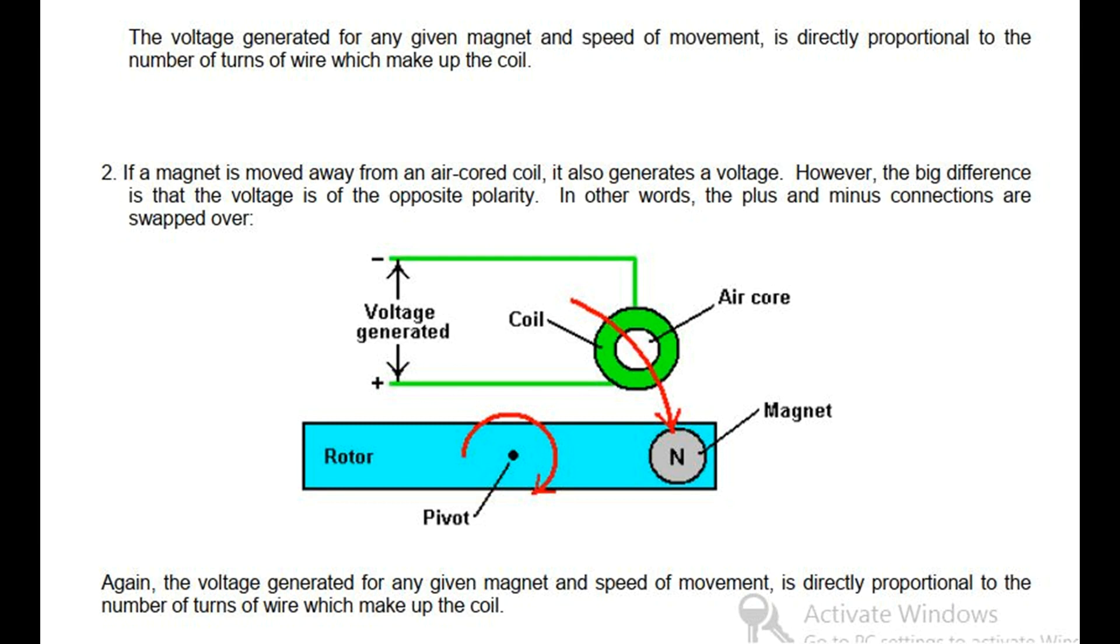In other words, the plus and minus connections are swapped over. Again, the voltage generated for any given magnet and speed of movement is directly proportional to the number of turns of wire which make up the coil.